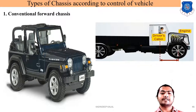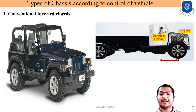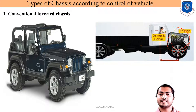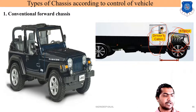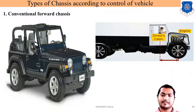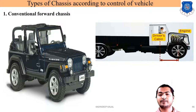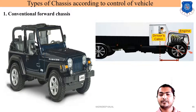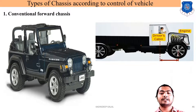In a conventional forward chassis, the engine is mounted in front of the driver's cabin. The total engine is mounted ahead of the driver's cabin. What happens with this type? The visibility of the road for the driver is very less because this area is covered by the engine. So visibility of road is very less and weight is concentrated on the front axle side.